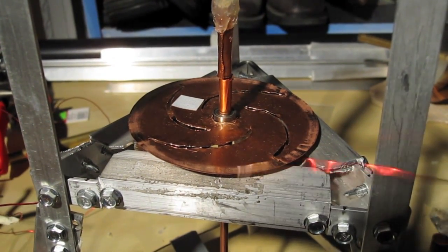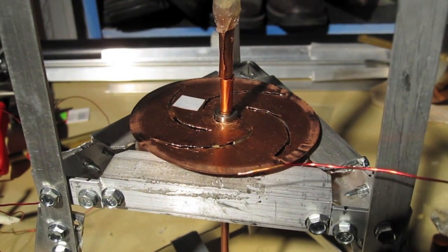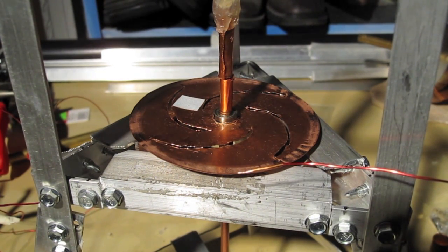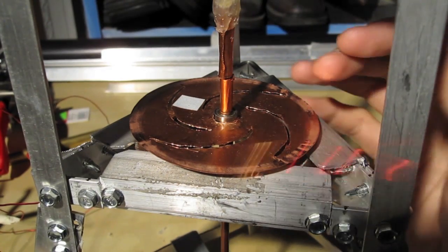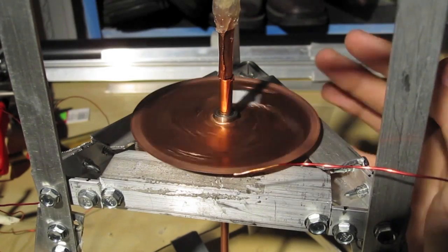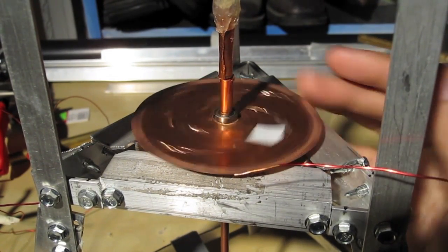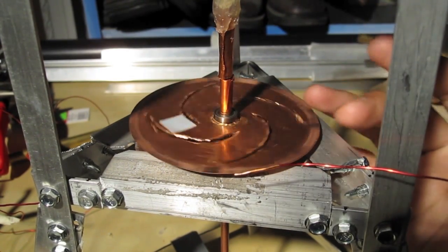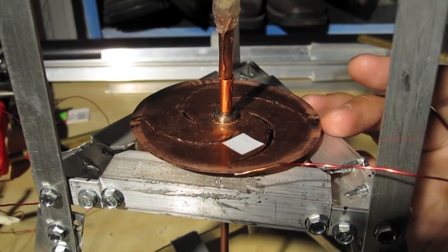Then in the 80s, Bruce De Palma came on the scene with his, was it an N machine or starburst machine or something like that? And Adam Trombley also created a very similar device. He's in the movie Thrive if you've seen it. And their devices are similar again. They're kind of based on spinning magnets and spinning copper discs.